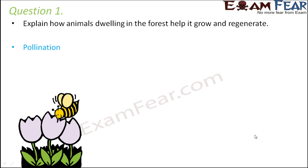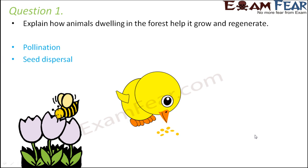So pollination is one thing where animals help plants. Seed dispersal — that is, carrying seeds from one place to another — is another way. The ovary of the plant becomes the fruit and the ovule becomes the seed. This seed is dispersed or transferred to other places by animals like birds, or other animals carry it with their paws or legs. Because of that, the seeds give rise to new plants in other locations, helping plants get new habitats.